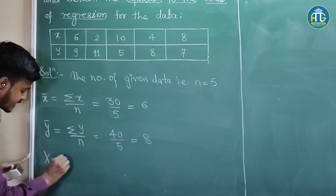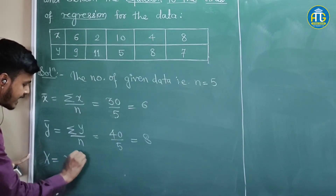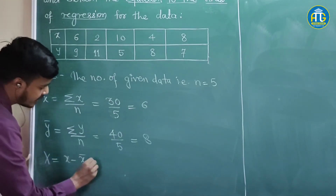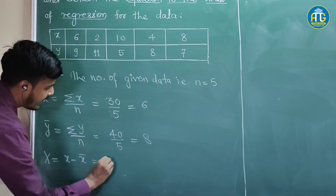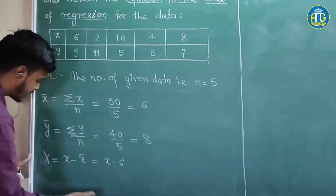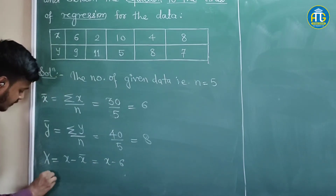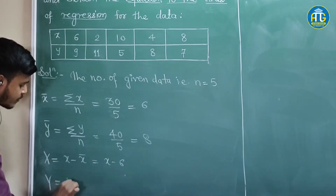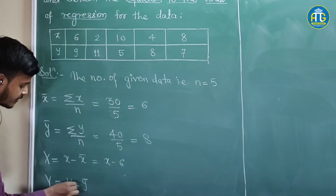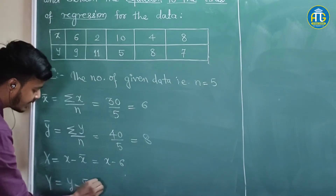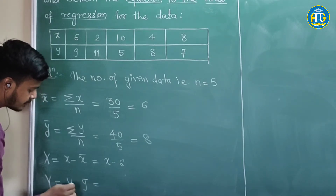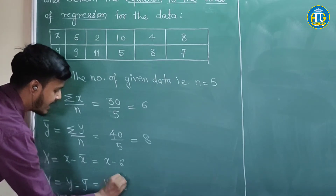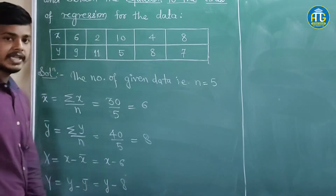Capital X is nothing but x minus x̄, which is x minus 6. And capital Y is y minus ȳ, that is y minus 8.